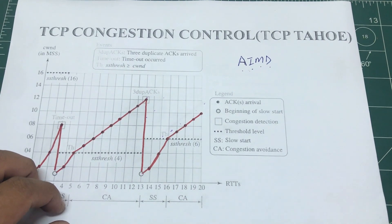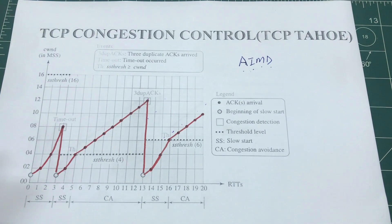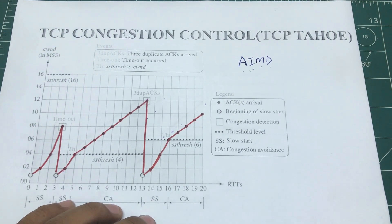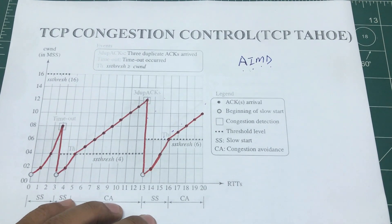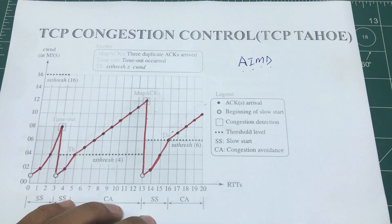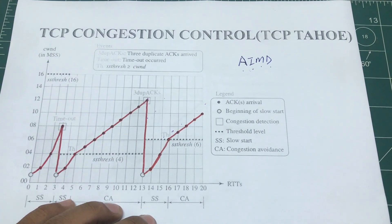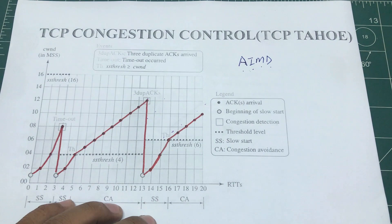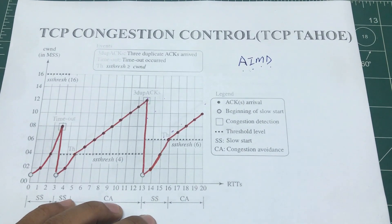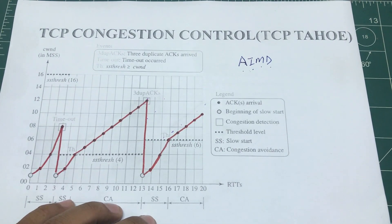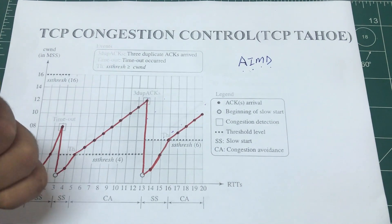The other thing that indicates congestion is triple or three duplicate ACKs. That can happen due to segmentation — you want to reorder your segments coming from your transport layer. The transport layer reorders segments according to sequence numbers. So the two congestion indicators are: timeout and duplicate ACKs.